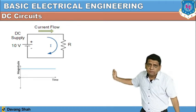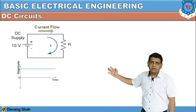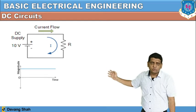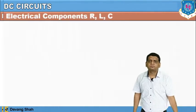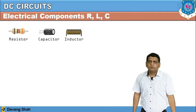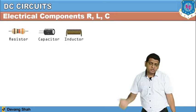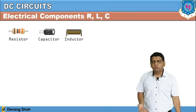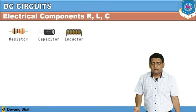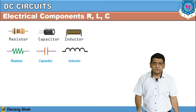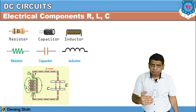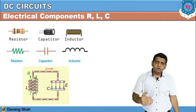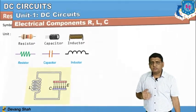In our first section, let us check the behavior of resistance under DC excitation. You can see a circuit where resistance is the only element and DC battery or DC voltage is applied. These are how the basic components look in the market. The symbols of resistance, inductor, and capacitor are shown, along with their units: the unit of resistance is Ohm, the unit of inductor is Henry, and the unit of capacitor is Farad.